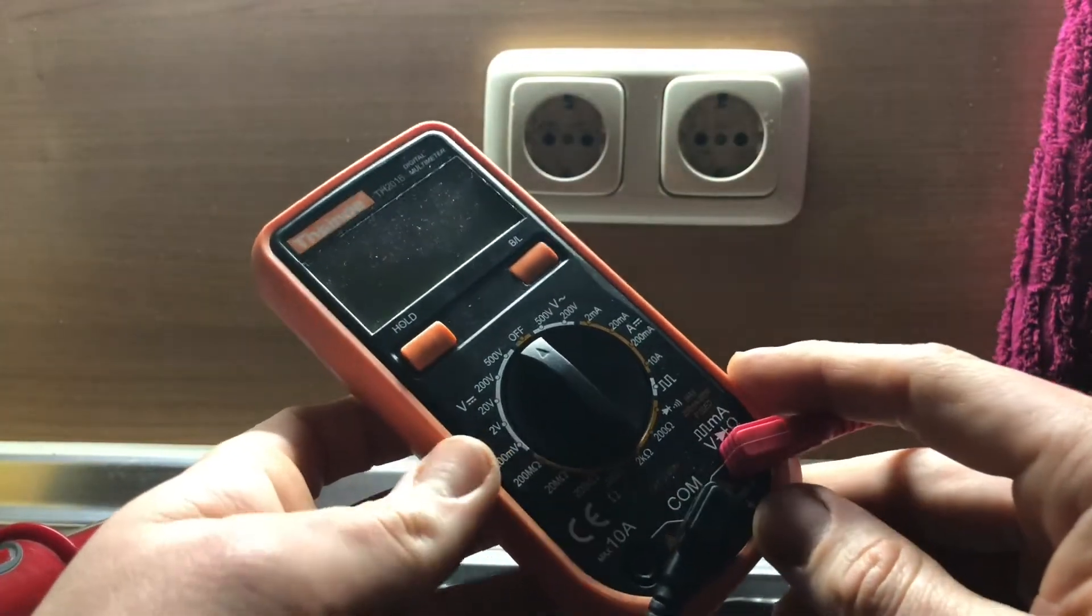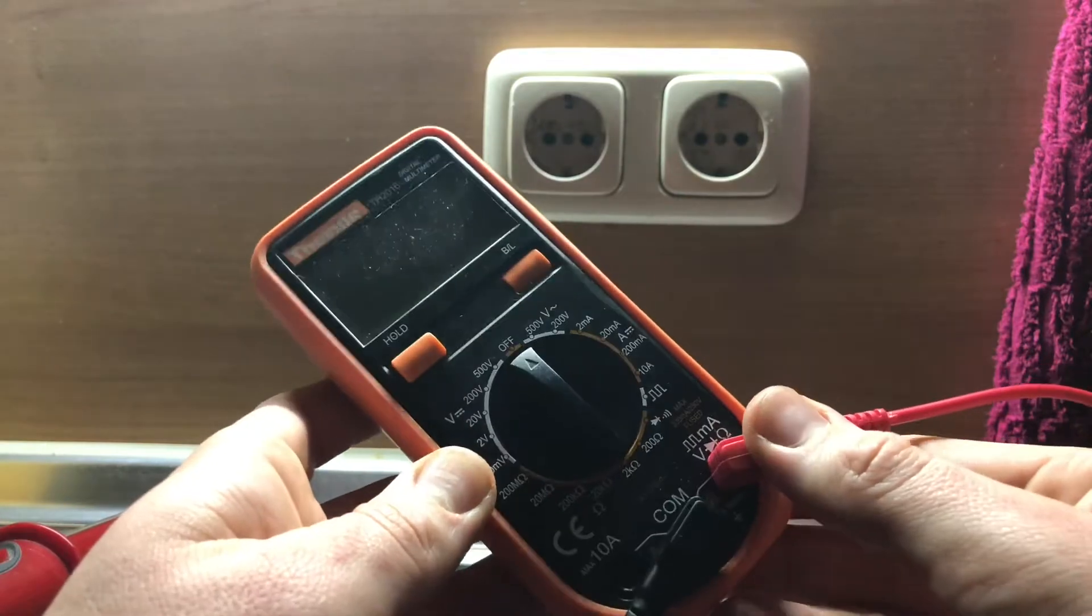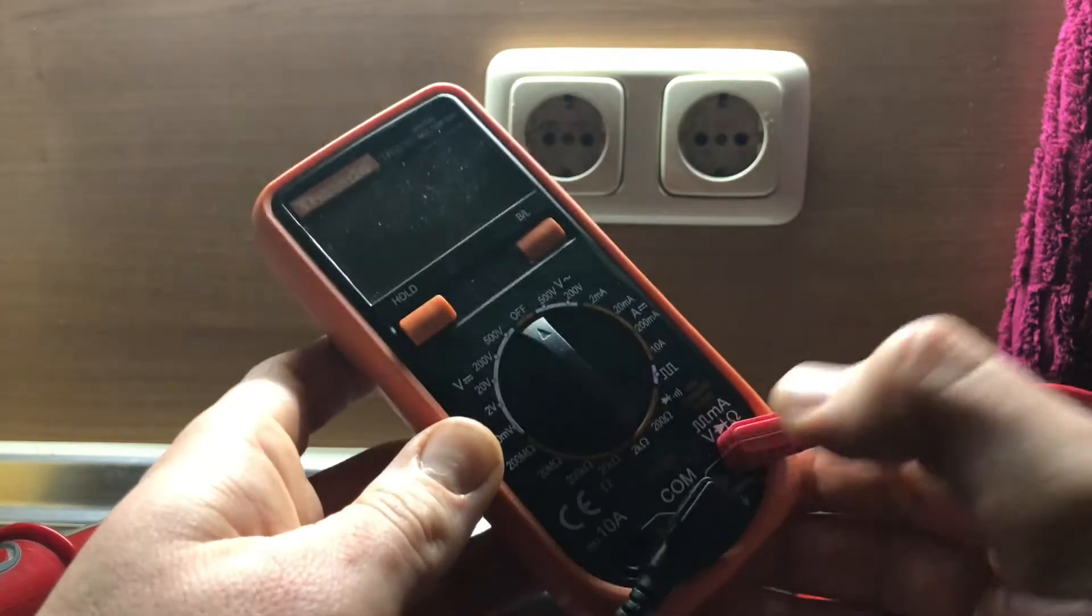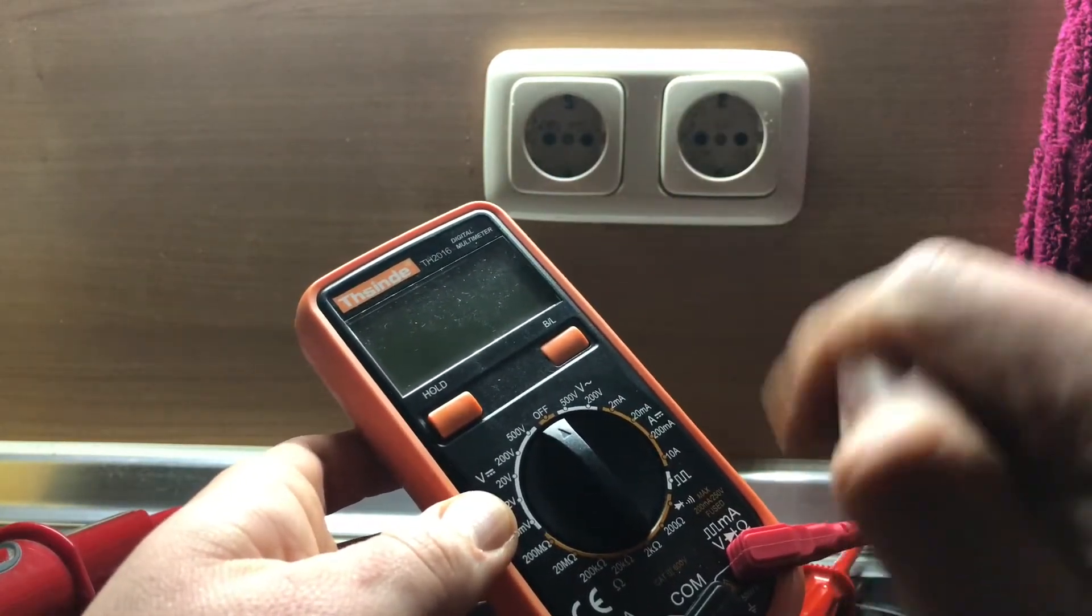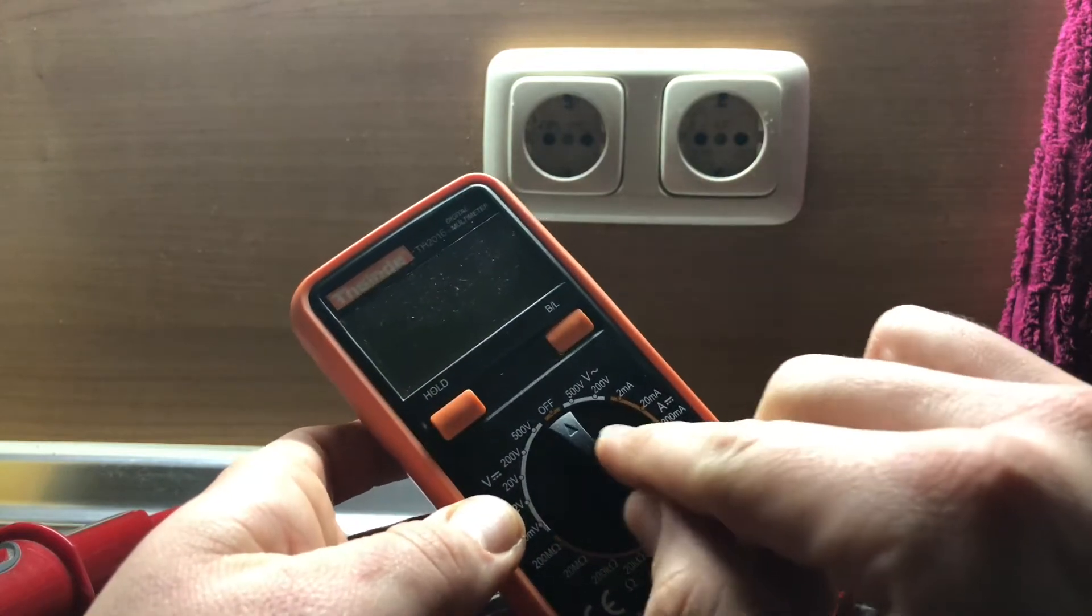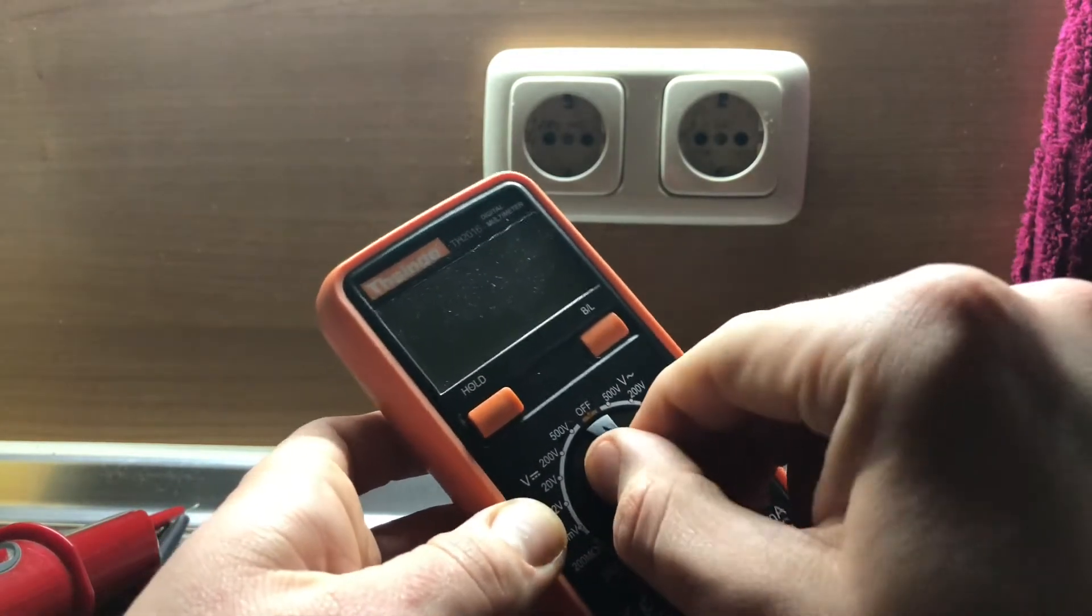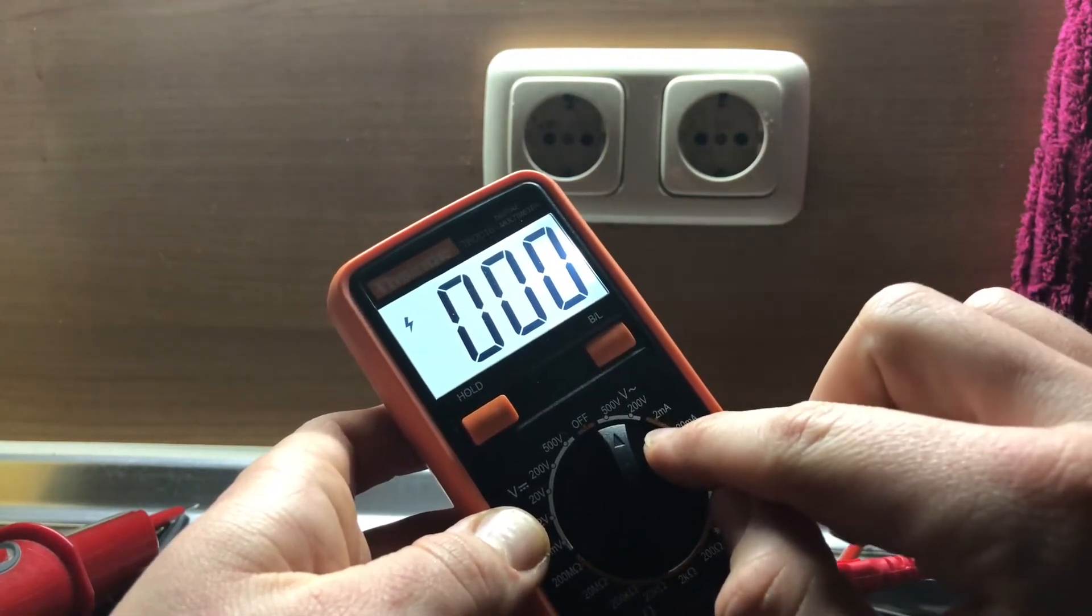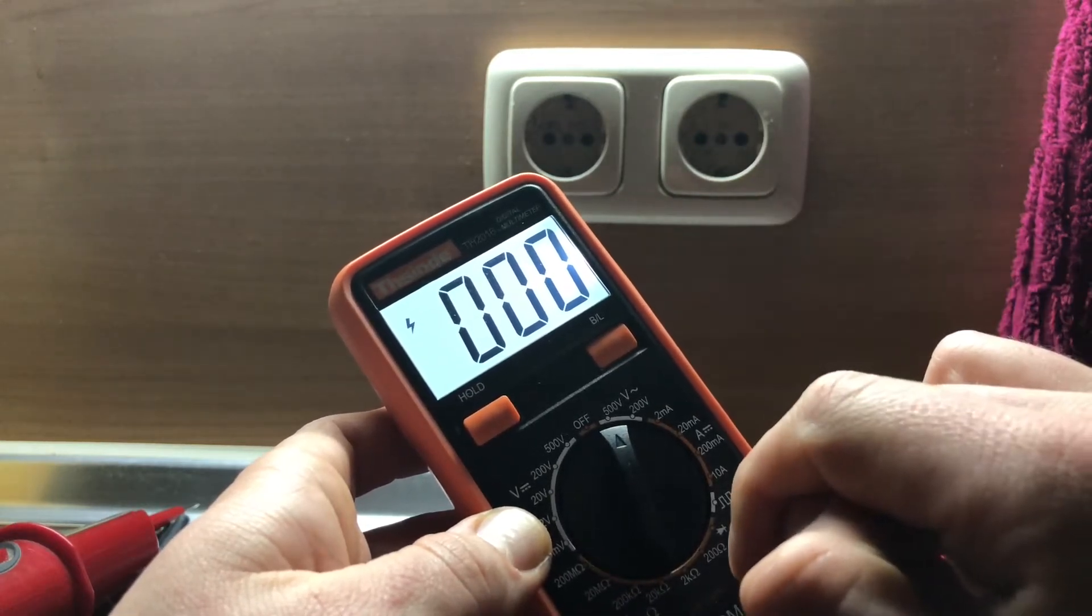Place number two goes to the multimeter. A multimeter or a multi-tester, also known as VOM, is an electronic measuring instrument that combines several measurement functions in one unit. This is awesome. A typical multimeter can measure voltage, current and resistance.